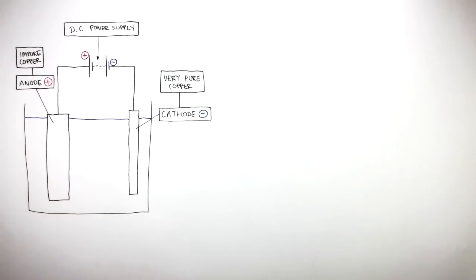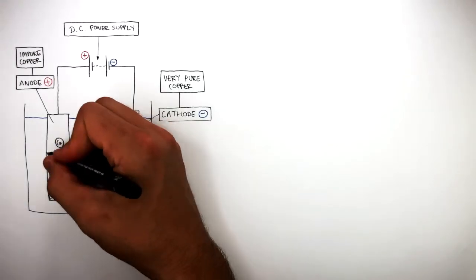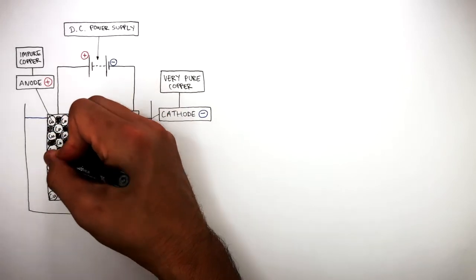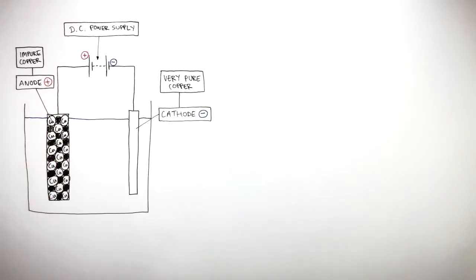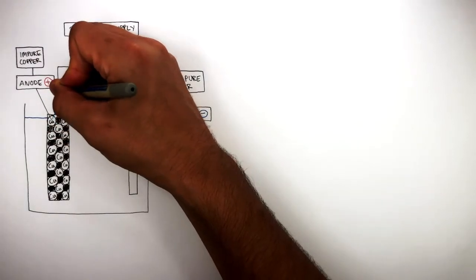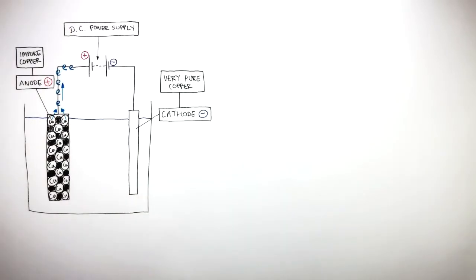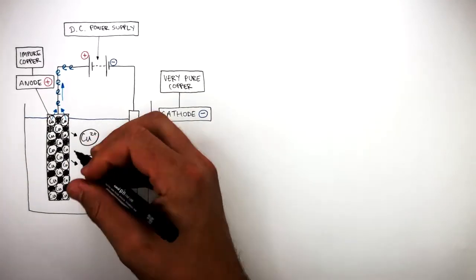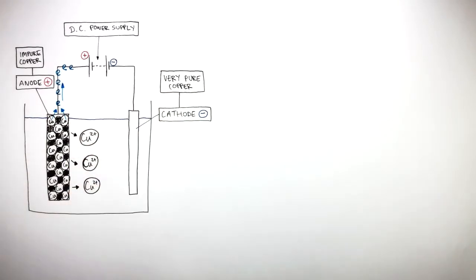Because the anode is made of impure copper, the anode is going to consist of copper atoms and impurities represented by the black circles. On the anode, each copper atom loses two electrons which flows towards the positive terminal of the DC power supply. Copper ions, Cu2+, then dissolve in solution.